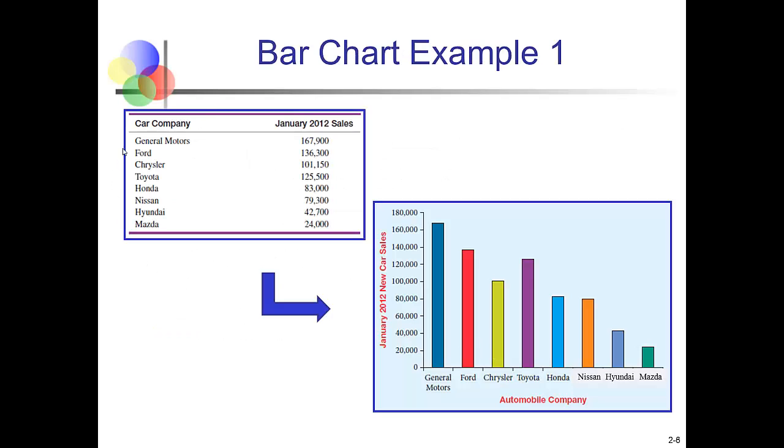So we have information from car companies, General Motors, Ford, Chrysler, and so on. And we see their January 2012 sales. You can look at this in the table and get lots of good information out of it. But a bar chart will often allow you to see things in a way that just seeing numbers in a table does not do. We use a bar chart here because we have different categories and we're trying to compare the relative importance of each of these categories. You notice the automobile manufacturers are along the horizontal axis and the sales are on the vertical axis. And the height of each bar represents the sales for that company.